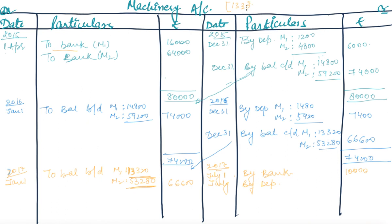Before recording the sale, we must compute depreciation on M1 from January to June 2017 — that is, 6 months (July is excluded since the machine is sold on July 1st). Depreciation on M1: 13,320 × 10% × 6/12 = rupees 666. The written down value of M1 just before sale is 13,320 − 666 = rupees 12,654, which is still more than rupees 10,000, so there is a loss on sale.